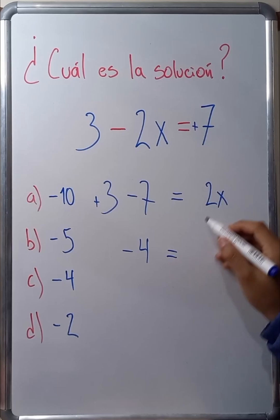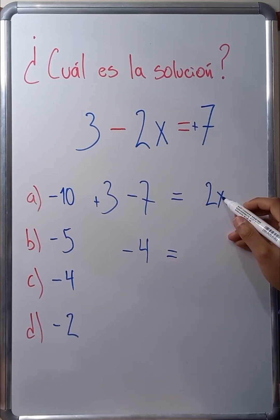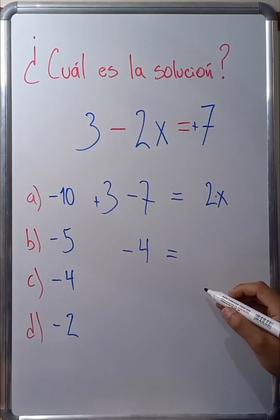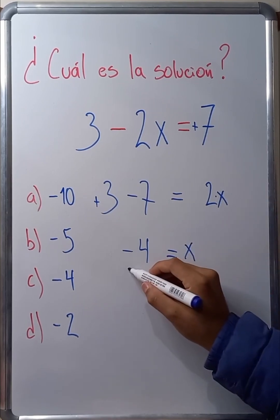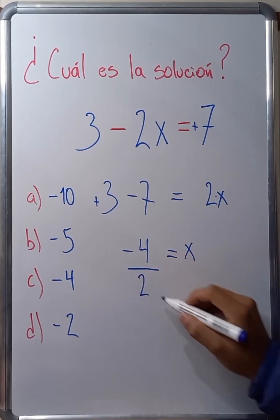This gives me negative 4. Here we have 2x. If I want to solve for x, then the 2 that's multiplying will move to the other side with the opposite operation. And we said that the opposite operation of multiplication is division.